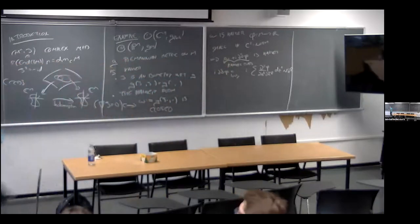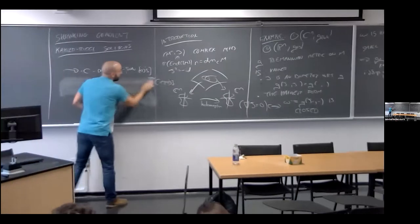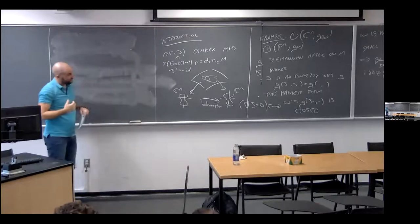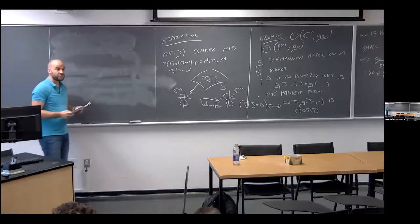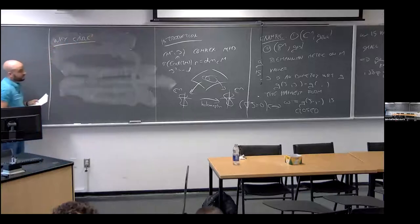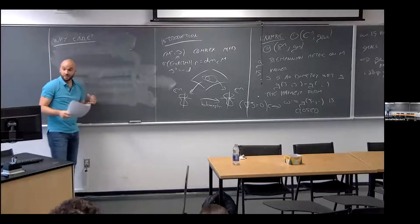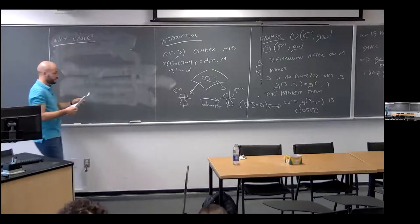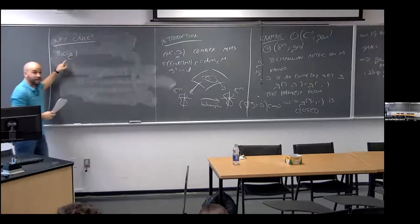Why do we care about Kähler manifolds? In Riemannian geometry the Ricci tensor is a matrix. But in Kähler geometry it has a smooth potential — it's determined by a smooth real-valued function locally. Specifically, the Ricci curvature is J-invariant, so you can compose it with J to get a two-form, and that two-form is closed. This is unique to Kähler geometry.